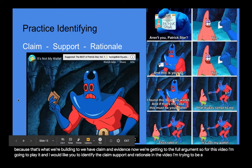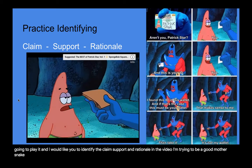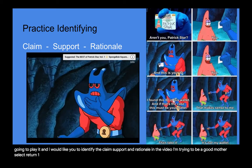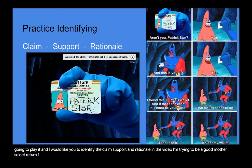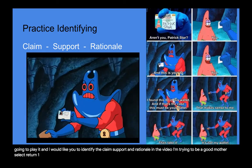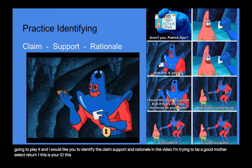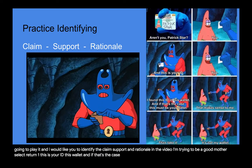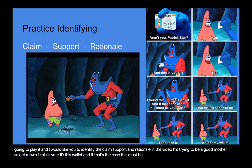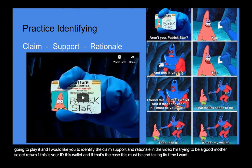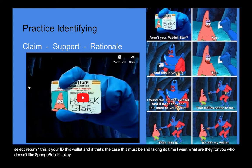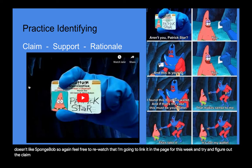The video clip plays: 'I am trying to be a good person and return it to you.' 'Return what to who?' 'I'm returning this to you, Patrick Star. This is your ID. I found this ID in this wallet, and if that's the case, this must be your wallet.' 'That makes sense to me.' 'Then take it.' 'It's not my wallet.' Feel free to rewatch it — I'm going to link it on the page for this week — and try to figure out the claim, support, and rationale.